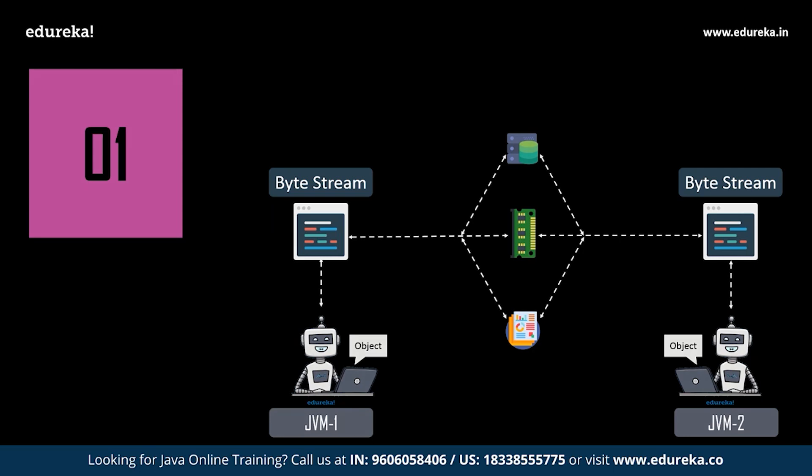We do have a compiler in Java. When a Java developer writes code, it is first decoded and converted into bytecode by the Java compiler. This bytecode is then transferred to the JVM — the Java Virtual Machine — which is where the magic happens. The code is interpreted and the relevant output gets generated.